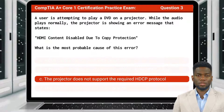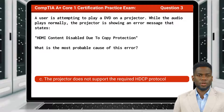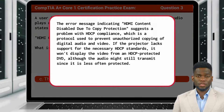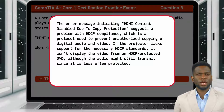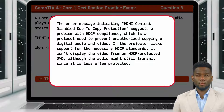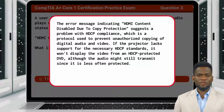The answer is C, the projector does not support the required HDCP protocol. The error message indicating 'HDMI content disabled due to copy protection' suggests a problem with HDCP compliance, which is a protocol used to prevent unauthorized copying of digital audio and video. If the projector lacks support for the necessary HDCP standards, it won't display the video from an HDCP-protected DVD, although the audio might still transmit since it is less often protected.